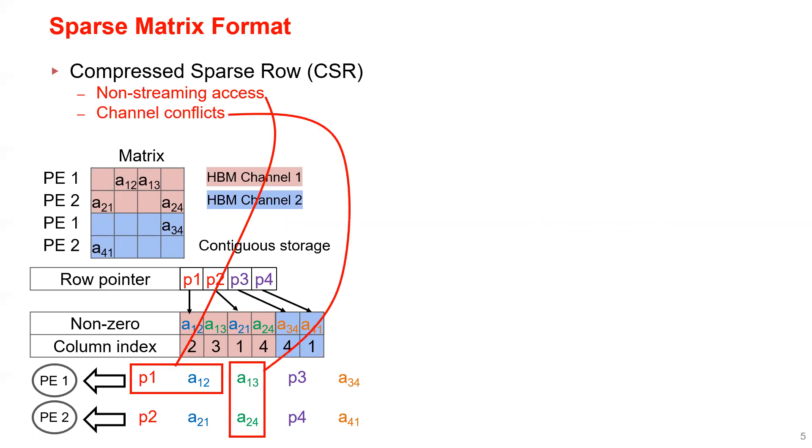Moreover, since rows in CSR are stored in contiguous memory locations, two PEs can access the same HBM channel at the same time, causing channel conflicts.